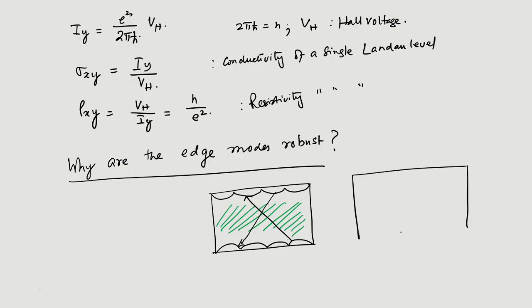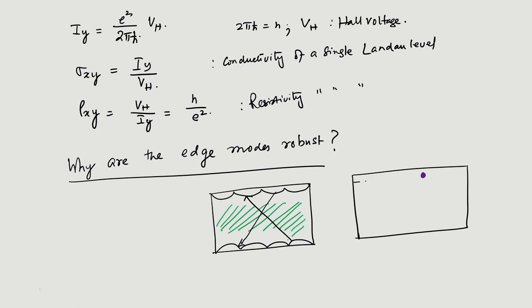The edge modes remain robust and give rise to conductivity. In fact, experiments show that if you place a single impurity near the edge, the edge modes will simply maneuver around the impurity and not get scattered, because there is no phase space for scattering — no available states to scatter into.